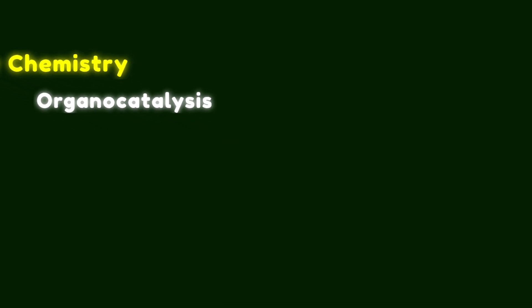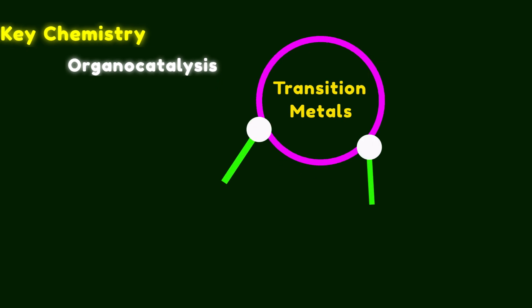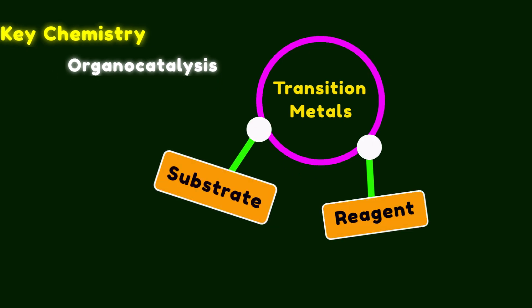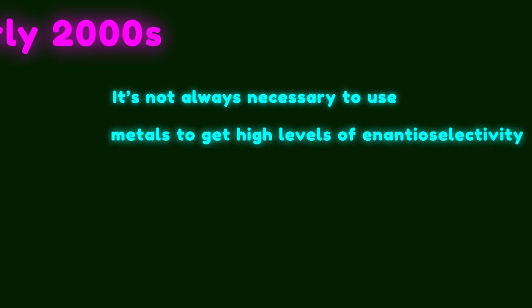The key chemistry in this total synthesis is organocatalysis. You know carrying out a huge number of reactions is only possible because of transition metals. That's mainly because they have labile coordination sites that can hold chiral ligands and allow substrates and reagents to come together. Interestingly, these reactions can happen in a chiral environment. But in the early 2000s, several chemists around the world realized that it is not always necessary to use metals to get high level of enantioselectivity in catalytic reactions.